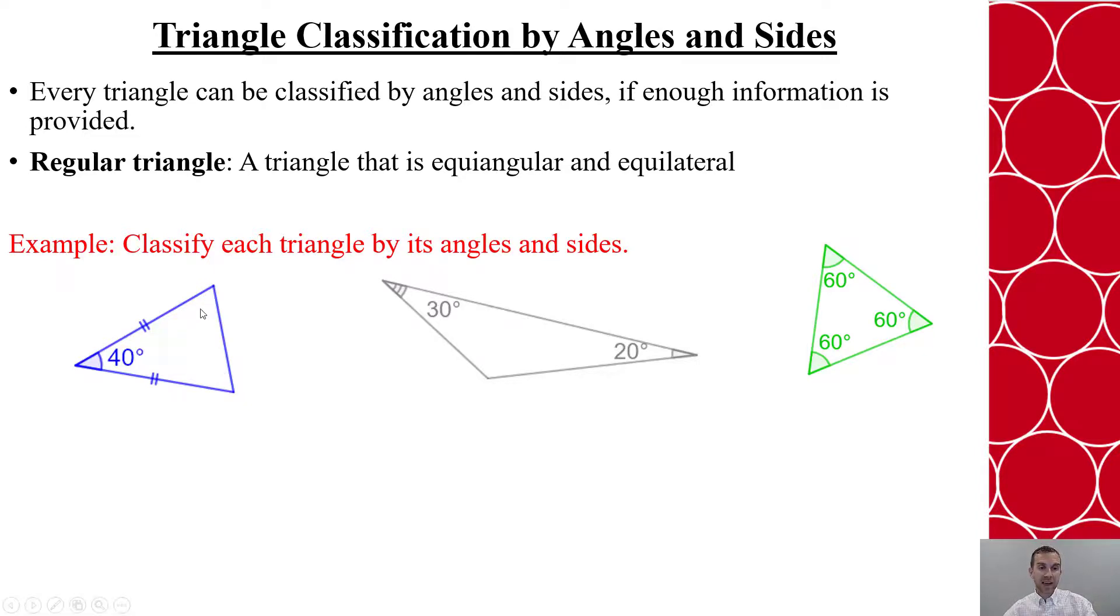And I can say that 40 plus 2x has to equal 180 degrees. So I can now solve my equation and get that each of those measures has to be 70 degrees. Since this is 70, this is 70, this is 40. This is an acute isosceles triangle.